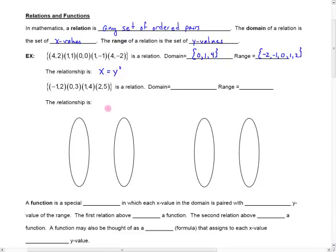Here's another relation. Here's a set of ordered pairs. The domain would be negative 1, 0, 1, and 2. And the range would be 2, 3, 4, and 5, just the set of the y values there.